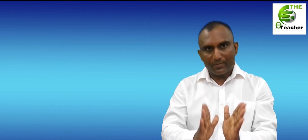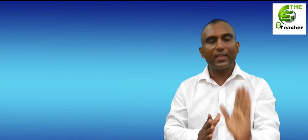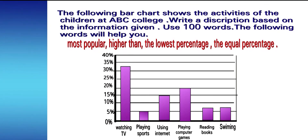One question is: do you have any questions about the question? You must have a clear understanding. I'll read the question. The following bar chart shows the activities of the children at ABC College. Write a description based on the information given — those are around 100 words. The following words will help you: most popular, higher than, lowest percentage, equal percentage, lowest percentage. That is the question.